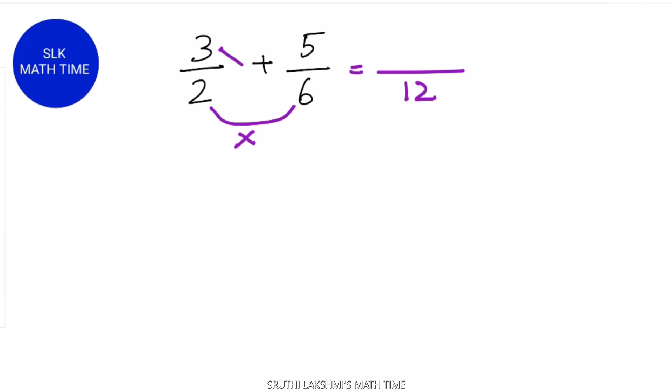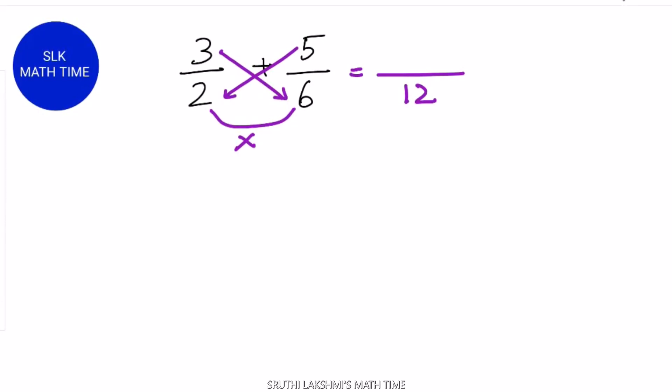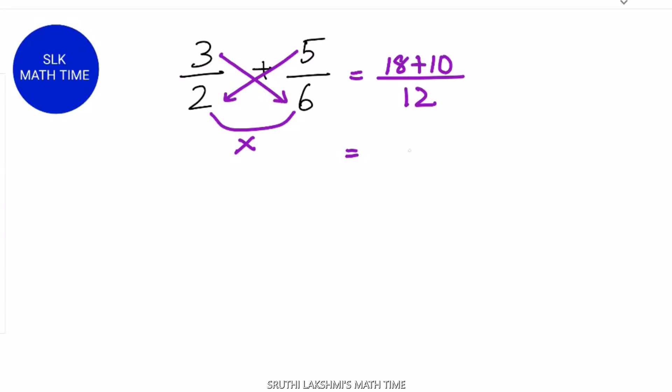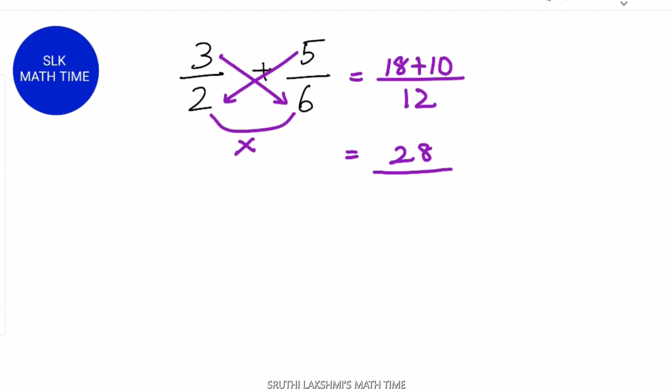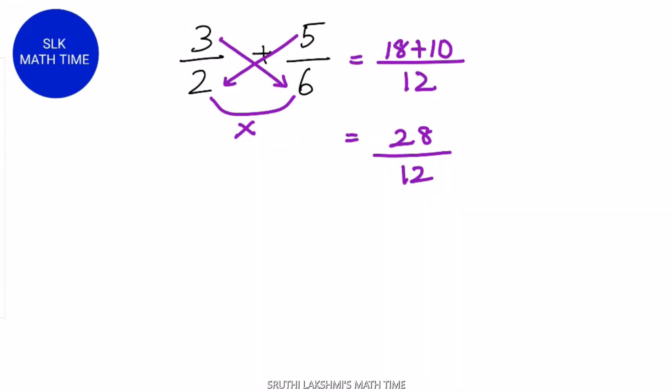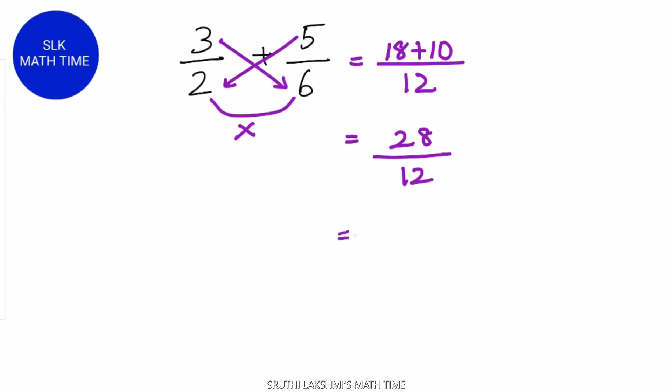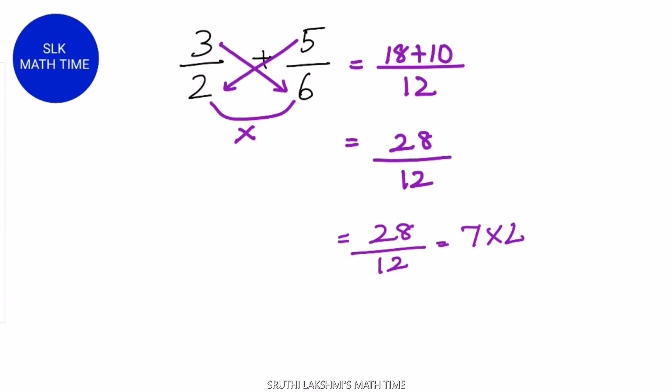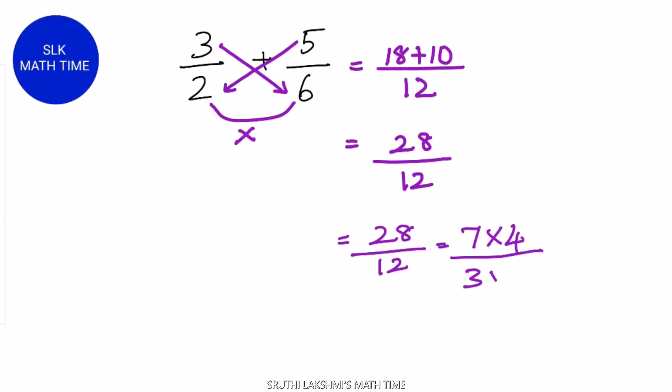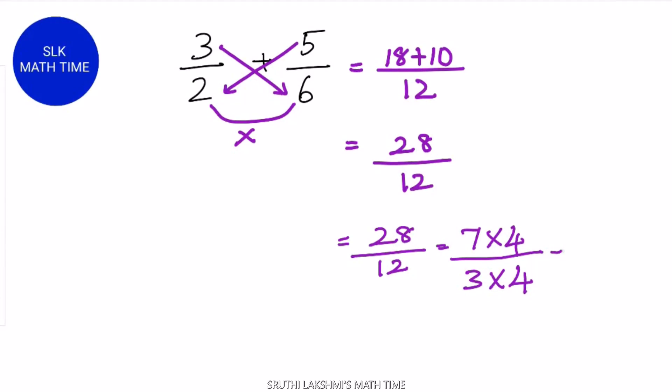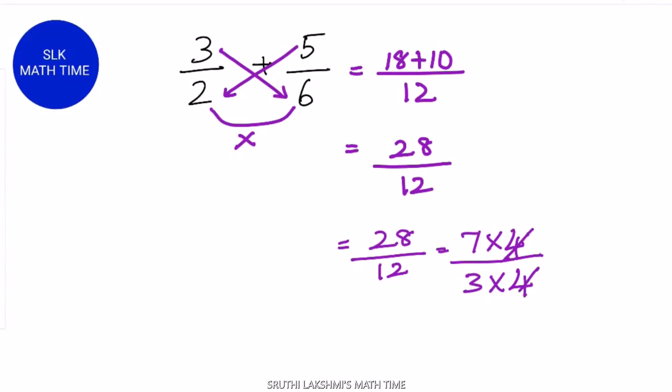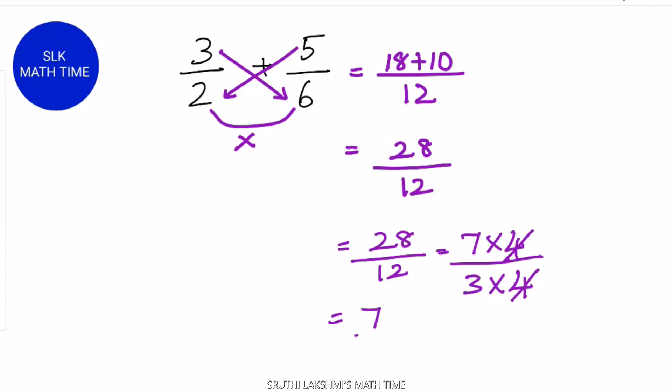Next, cross multiply 3 into 6 and 5 into 2. 3 into 6 is 18 and 5 into 2 is 10. 18 plus 10 is 28 by 12. Both 28 and 12 are divisible by 4. 28 goes 7 times in 4 and 12 goes 3 times in 4. We have to cross cancel 4 and 4 to get 7 by 3.